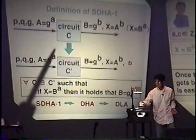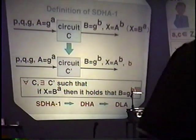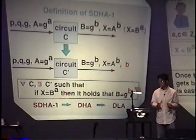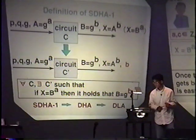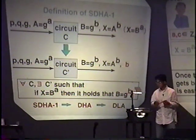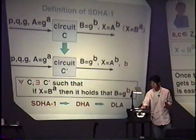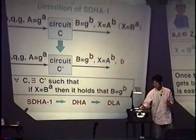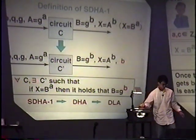SDHA-1 says: for any circuit C, there exists another circuit C-prime such that whenever a circuit C outputs B and X satisfying X equals G^(bA), the circuit C-prime also knows the secret point b. And this assumption is fundamentally different from the standard complexity assumption such as one-way functions, because in the standard complexity assumption there is only one circuit. So this assumption seems very strong, but I believe this assumption is reasonable. And I can prove that the Strong DH Assumption 1 implies the DH assumption. That is why we call this the Strong DH Assumption.